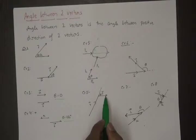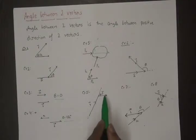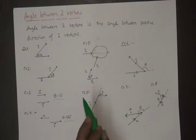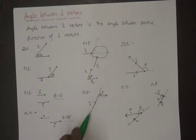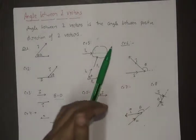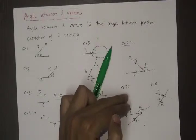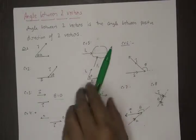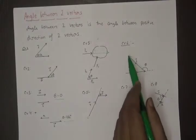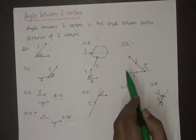Next example: a force F is acting on a body at a point at a distance R from a point O. What is the angle between R and F? Again, we have to find the angle between the positive directions of the two vectors. The positive direction of R is this and the positive direction of F is this. The angle between R and F will be this angle.